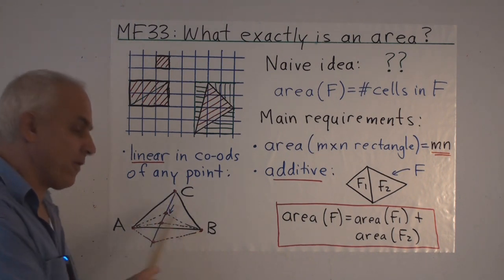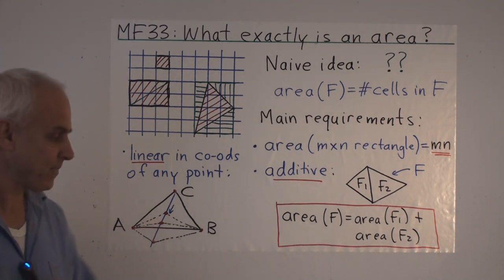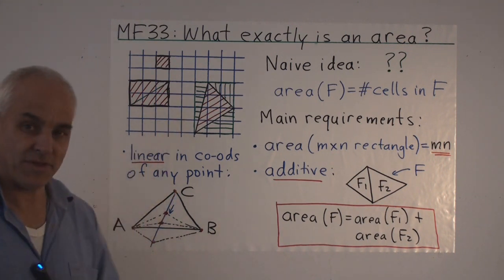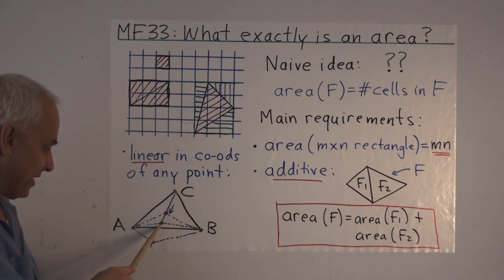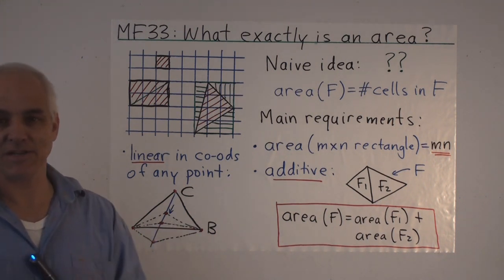Then we would expect that the area of this triangle should also behave linearly. That works up to a point with this notion, until we get to this zero area situation down here. And then after that it becomes positive again, and so the linearity is destroyed.